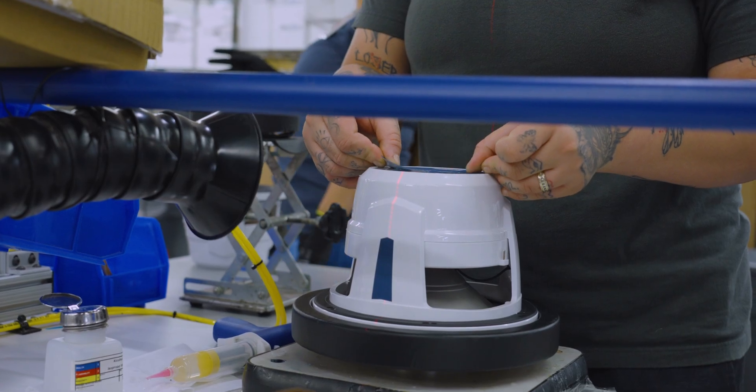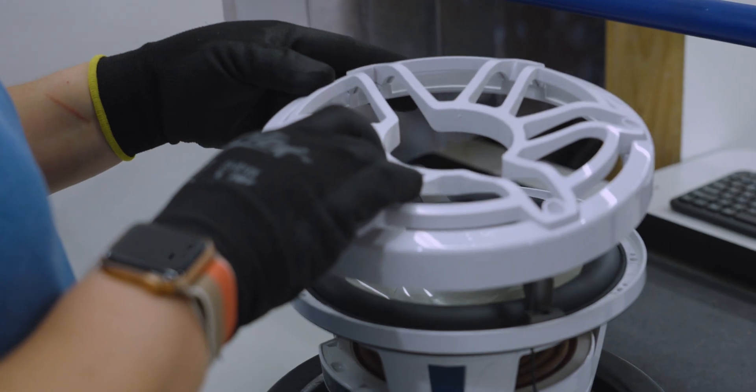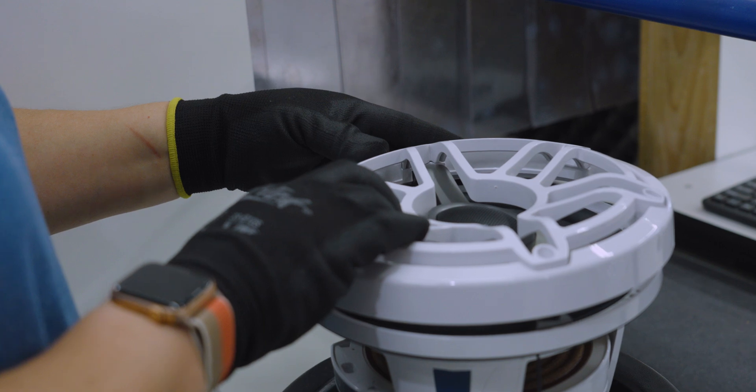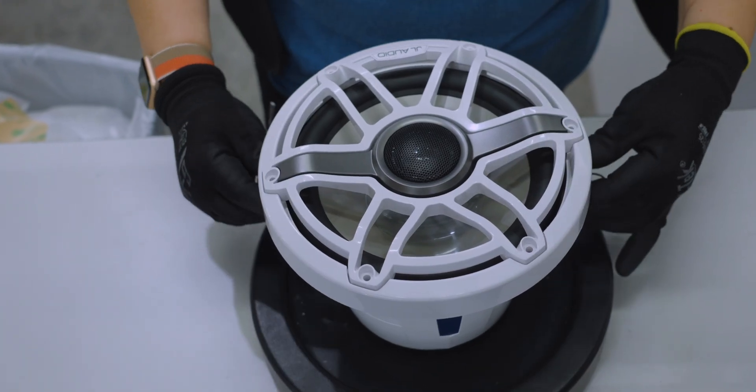An additional sticker is applied to the back of the basket with the speaker's model information. Next, the speaker receives the iconic JL Audio speaker grill cover. Once complete, it makes its way for final QC and testing.